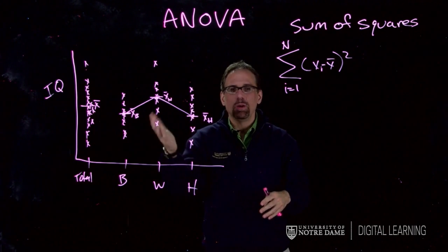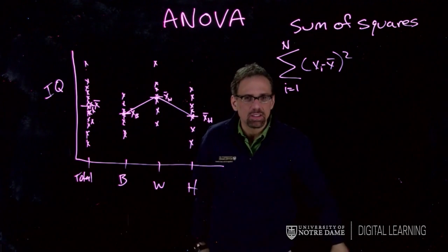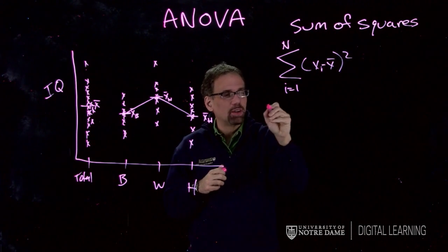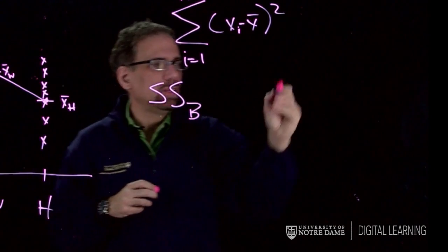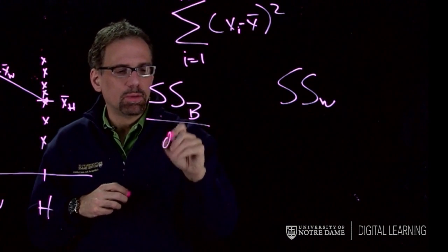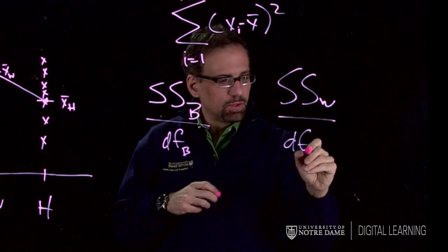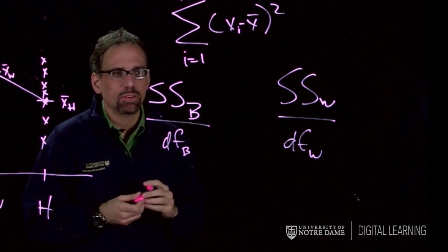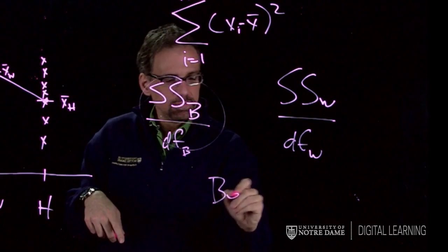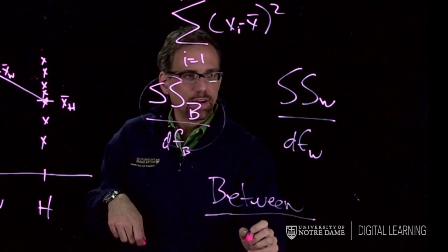That comparison is going to help me know whether this difference really means much, or if it's just part of the big noise of the within group variation. I'm going to partition this sum of squares into two pieces: the sum of squares between and the sum of squares within. Then I'm going to divide them by their degrees of freedom. I've got my degrees of freedom between and my degrees of freedom within - I'll tell you how to get those in just a second. So I'm basically going to take this between thing and divide it by the within thing.